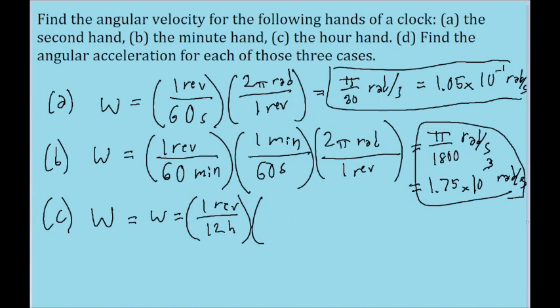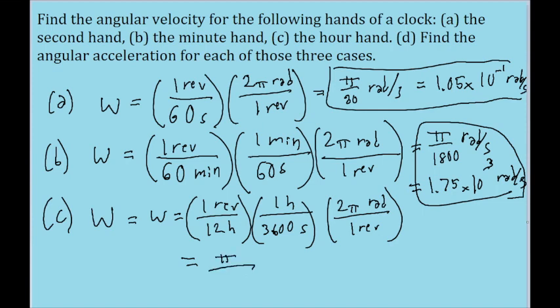So I'm going to convert again from hours to seconds. So 1 hour is equal to 3600 seconds. And then again, convert from revolutions to radians. 2 pi radians is equal to 1 revolution. And if we put that into our calculator...